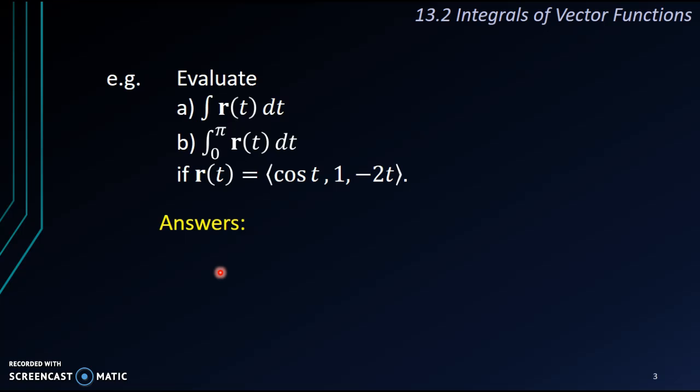Now, for example, let's say if we want to integrate r(t), which is (cos t, 1, -2t), using two types of integration. The first type, question a, is to find the indefinite integral, and the second type is to look for the definite integral from 0 to π.